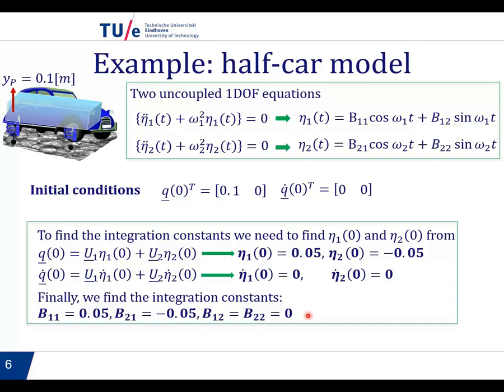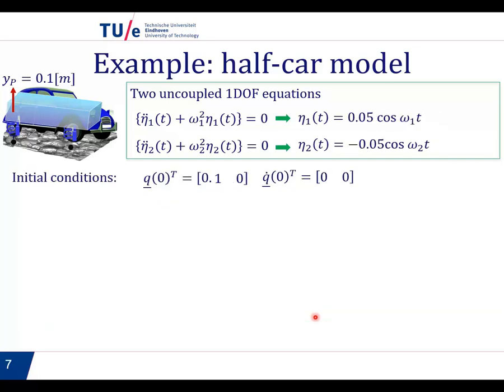Summarizing, this leads to the following solutions. Eta 1 is simply 0.05 cos omega 1t, and eta 2 is minus 0.05 cos omega 2t. And the last thing we need to do is combine these two to obtain the generalized coordinates.